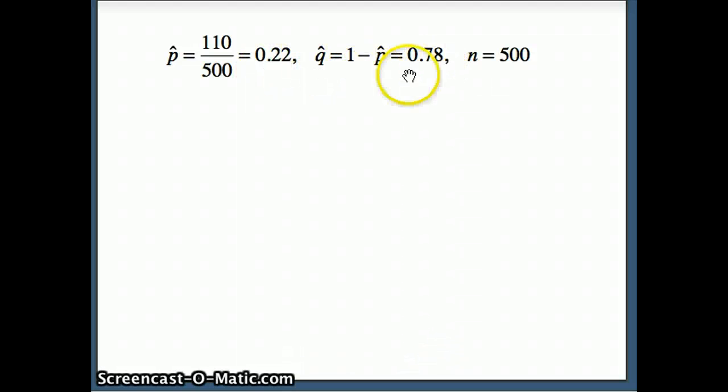So q-hat is the probability of a failure, which in this case means not getting an A, and n is the total number of trials. n is 500. So again we remember from before that z of 0.025 is negative 1.96.